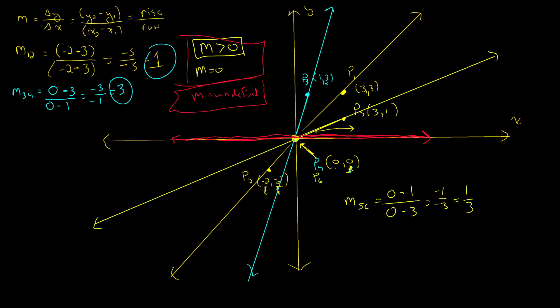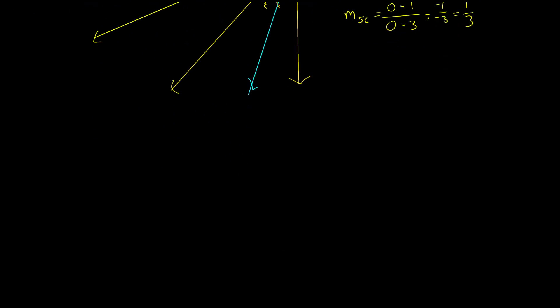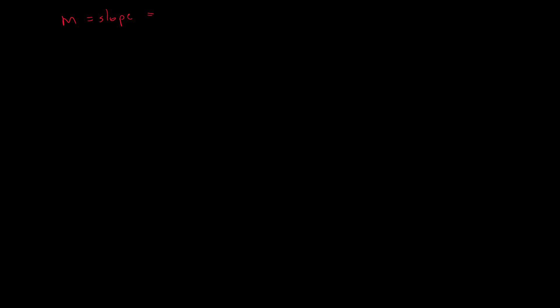The absolute value of the slope tells us how big the change is, and the plus or minus tells us the direction. Slope becomes a useful way of talking about how linear functions are changing — we also call slope the rate of change. It's the change in y over the change in x, the rise over the run, or how y is changing compared to x.